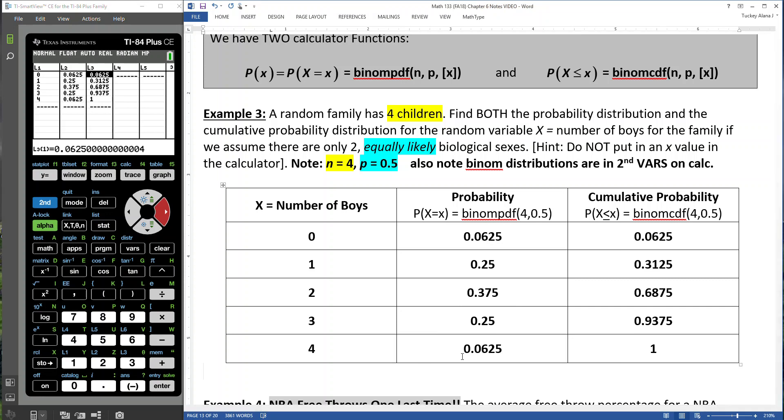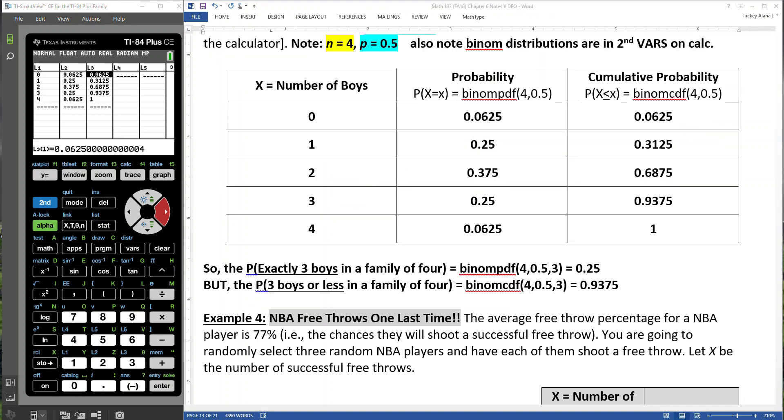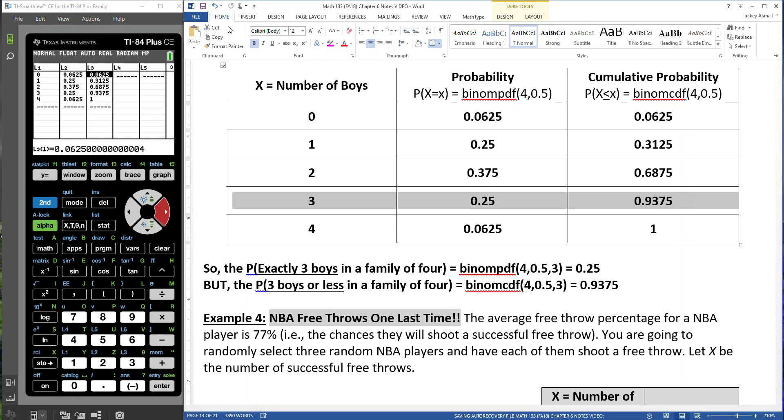So the cumulative probabilities add up all the individual probabilities. So the PDF finds the chances of two boys, the chances of three boys. The cumulative finds the chances of three or less boys, right, the chances of two or less boys. So let me write that up just real quickly. So the chances of, and I just picked two of them. I just picked these ones just to look at.